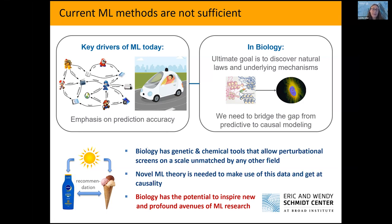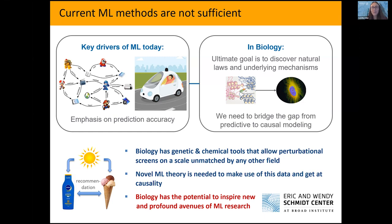That helps for getting at mechanisms. If you want to understand whether good weather increases ice cream consumption or the other way around — if you take a gloomy day and give out a lot of free ice cream and you realize the weather doesn't change, then you know that ice cream consumption is not upstream of good weather. So this is how perturbation screens can really help you get at the underlying causal mechanisms.